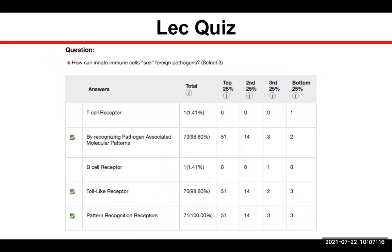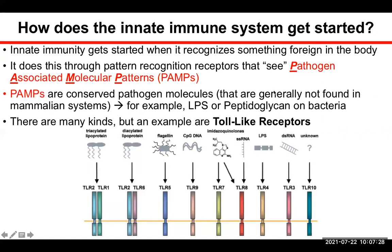How can innate immune cells see foreign pathogens? Understand these different terms and receptors. Toll-like receptors are an example of pattern recognition receptors, and pattern recognition receptors recognize pathogen-associated molecular patterns — basically conserved sequences on viruses, bacteria, worms, or whatever — and when recognized, they sound the alarms.